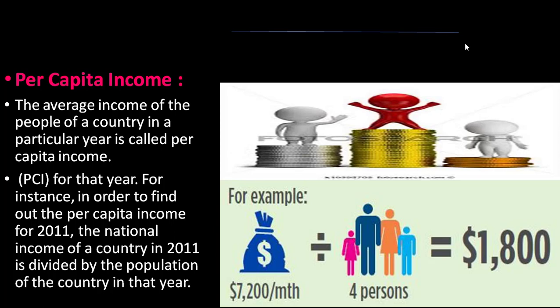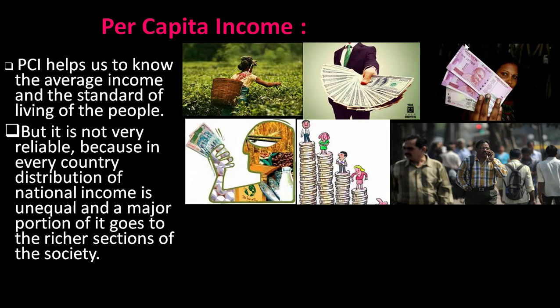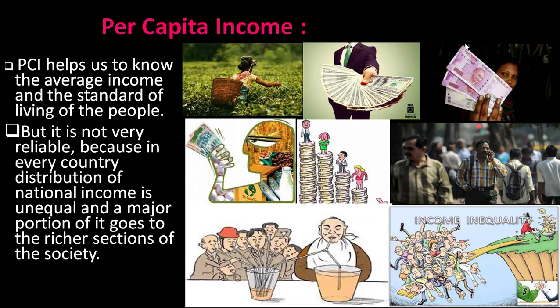The formula is: Per Capita Income (2011) = National Income (2011) ÷ Population (2011). With this formula we can get the per capita income of any country. Per capita income helps us know the average income and standard of living of the people. However, it is not very reliable because in every country, distribution of national income is unequal, and a major portion goes to the richer sections of society.